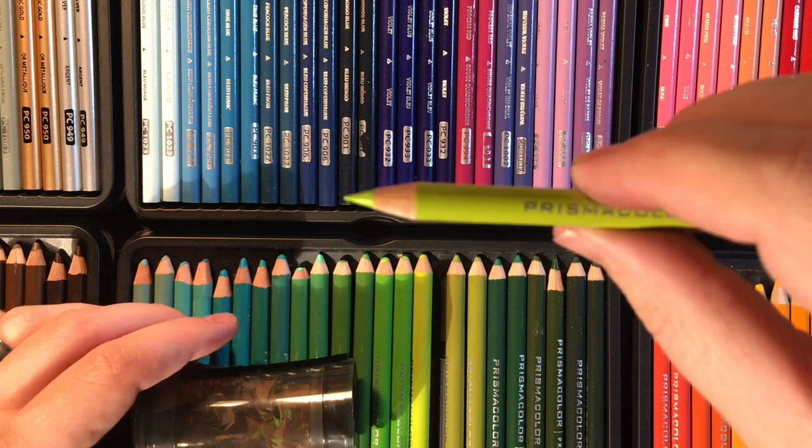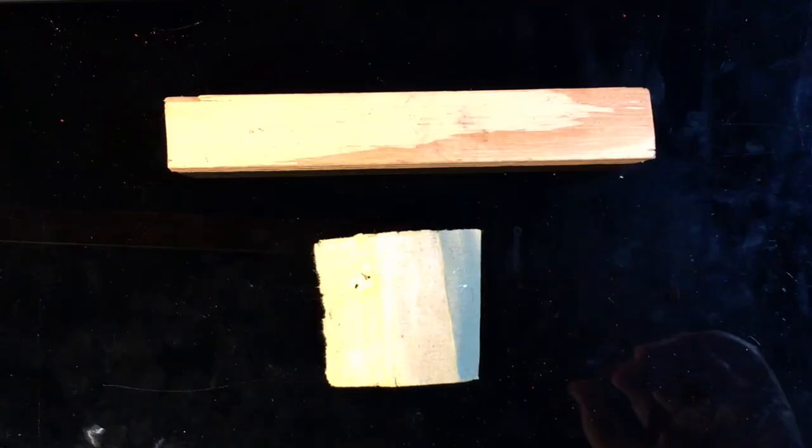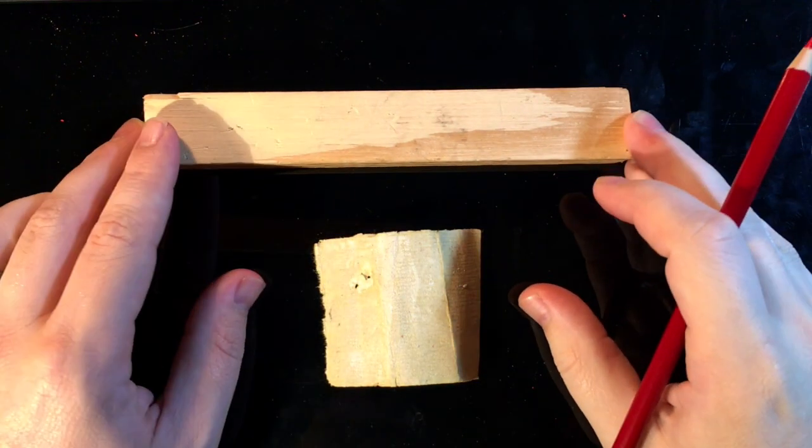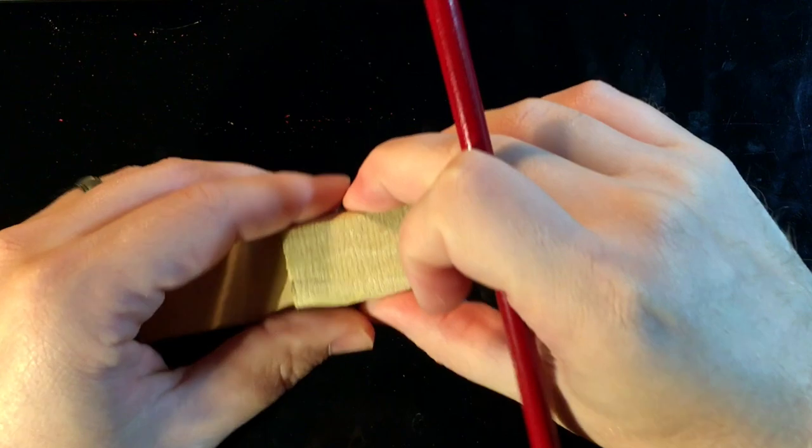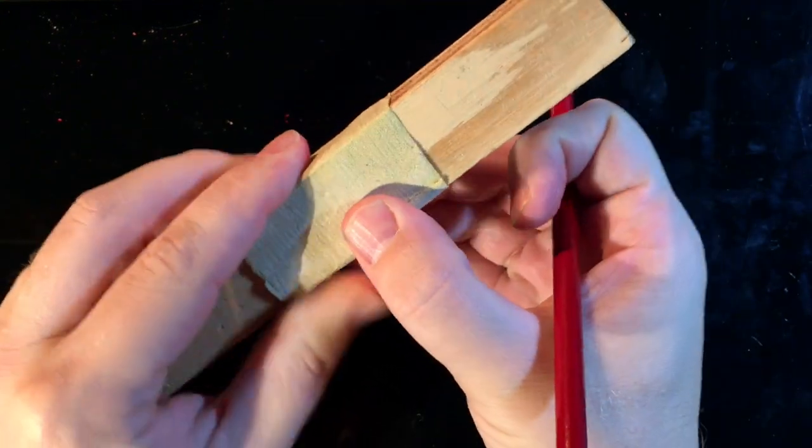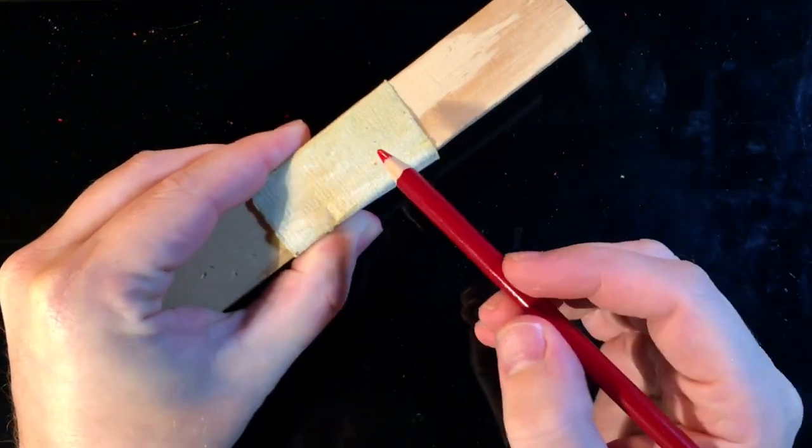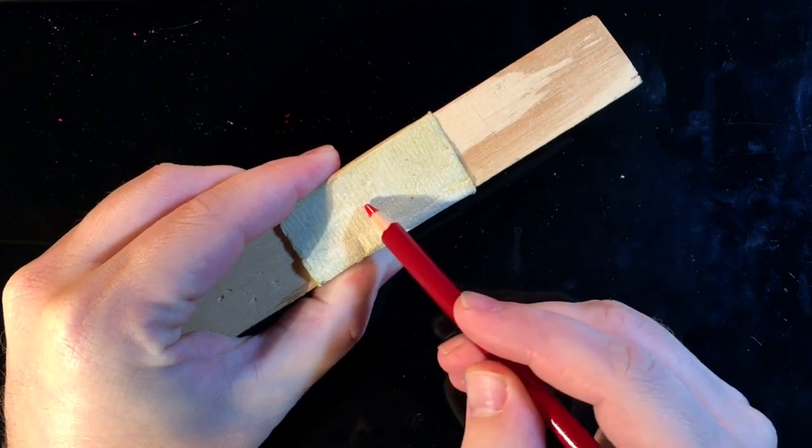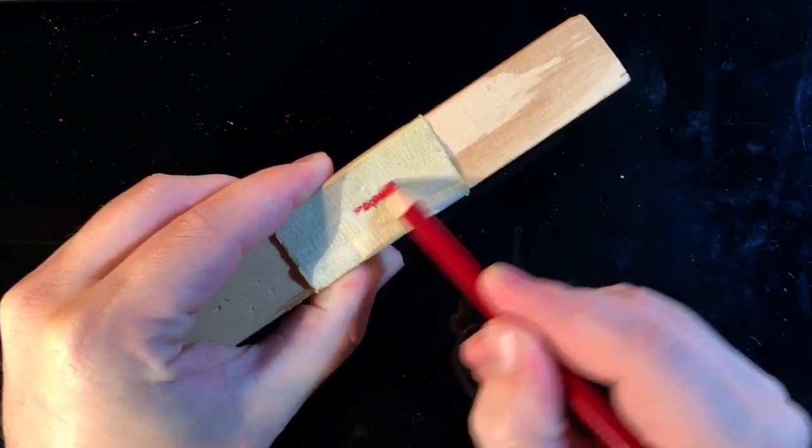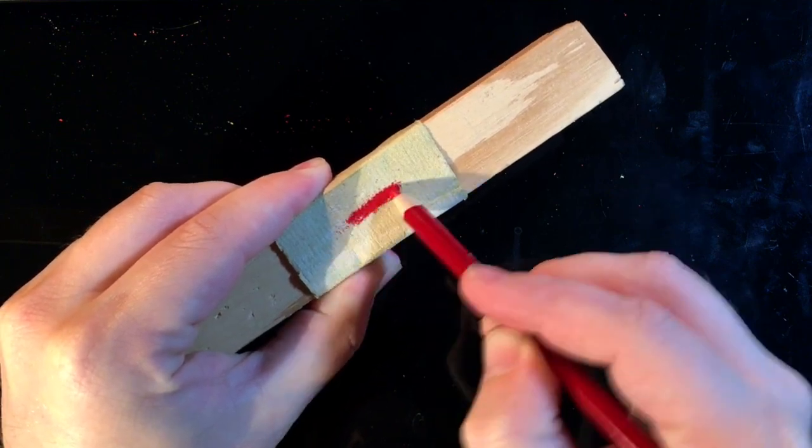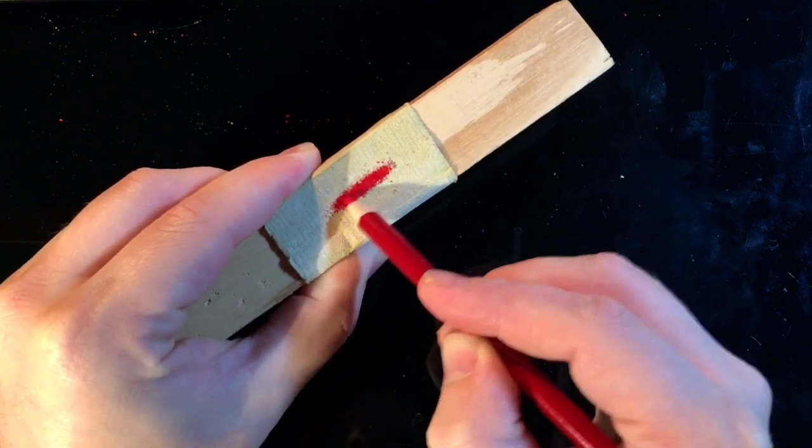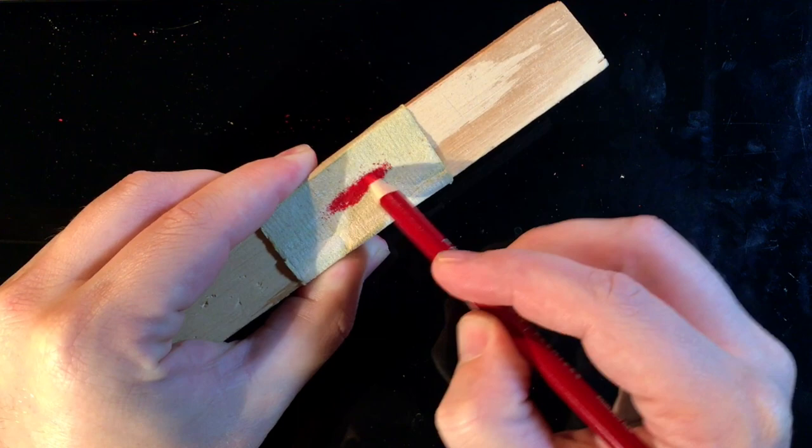So the last tip for saving on the Prismacolor pencils, not going through as fast, is using a piece of sandpaper on a block of wood. Once the actual tip is dull you can sharpen it rather than cutting down on the wood casing. This will save from the pencil getting cut down prematurely and you can get that tip back and get those details.